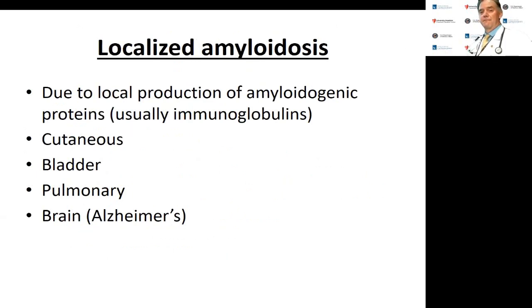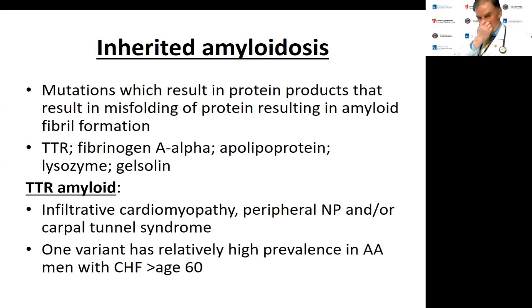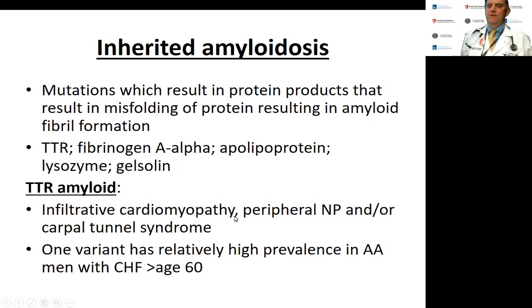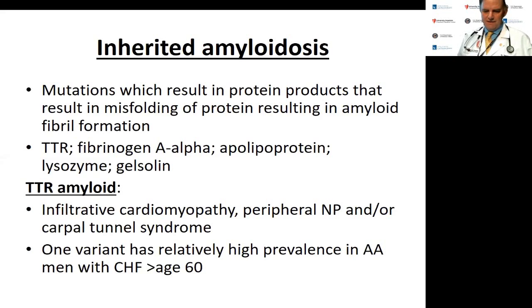There is also localized amyloid — usually the AL type with immunoglobulin light chains — involving the skin, bladder, or lungs, which is uncommon. Inherited amyloid involves mutations resulting in misfolded proteins forming amyloid fibrils. The most important mutation is TTR. These patients have an infiltrative cardiomyopathy; those with the inherited mutation, as opposed to wild type, tend to have peripheral neuropathy and carpal tunnel syndrome. One variant has a high prevalence in African American men with CHF over age 60.